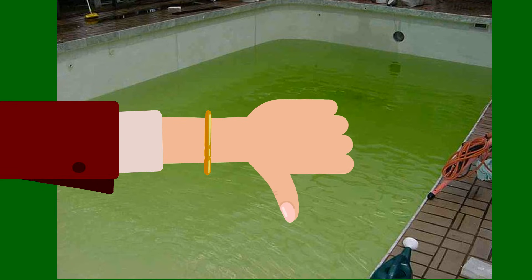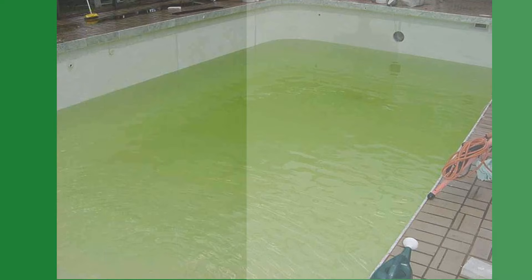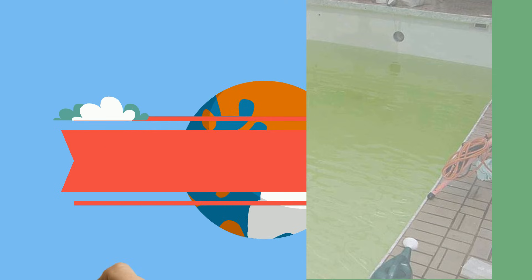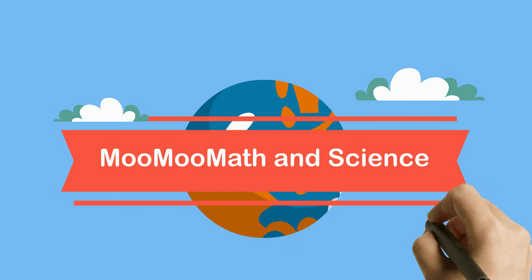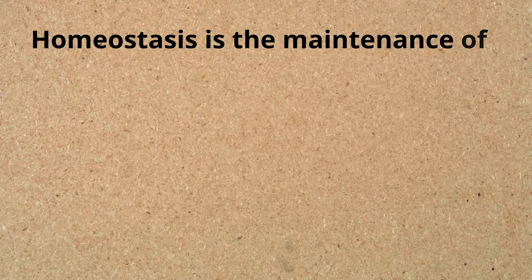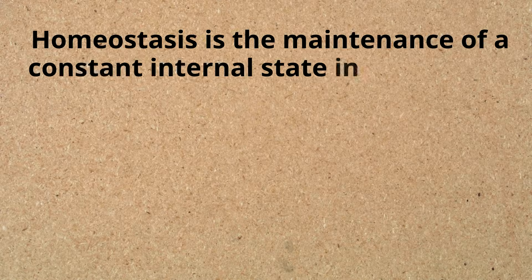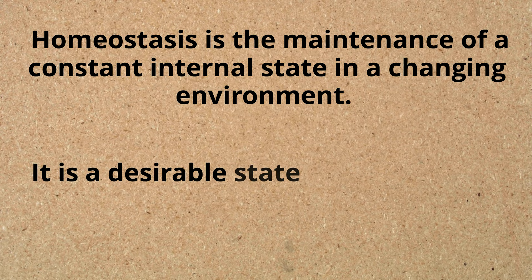Living organisms have to do the same thing. Welcome to MooMooMath in Science and examples of homeostasis. Homeostasis is the maintenance of a constant internal state in a changing environment. It is a desirable state of equilibrium.